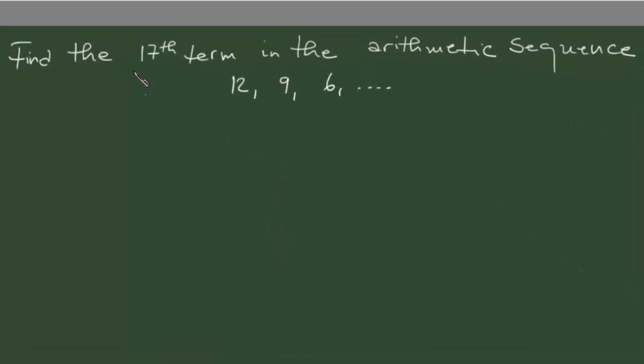Okay, in this video we want to find the 17th term in the arithmetic sequence below. We're having 12, 9, and 6. First of all, when you just at first look you can see that our first term is 12, so we're gonna say a equals 12 in this case here.